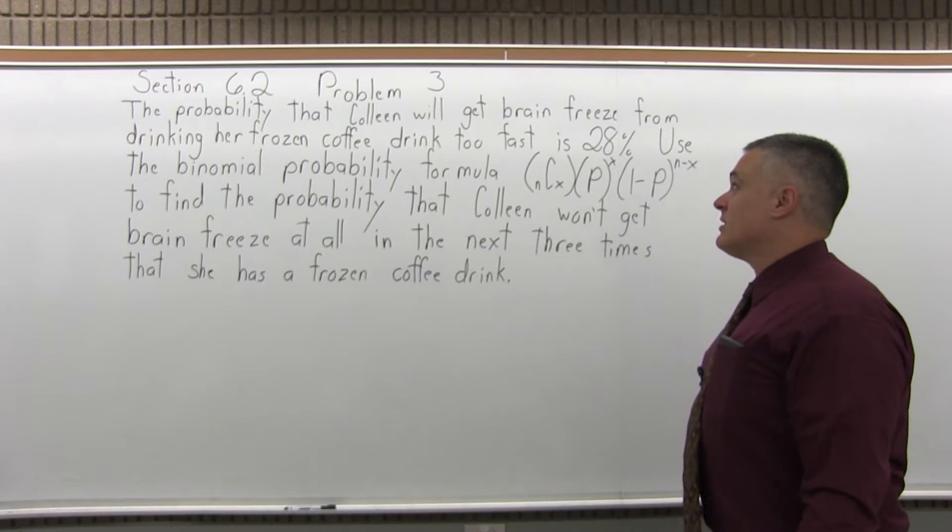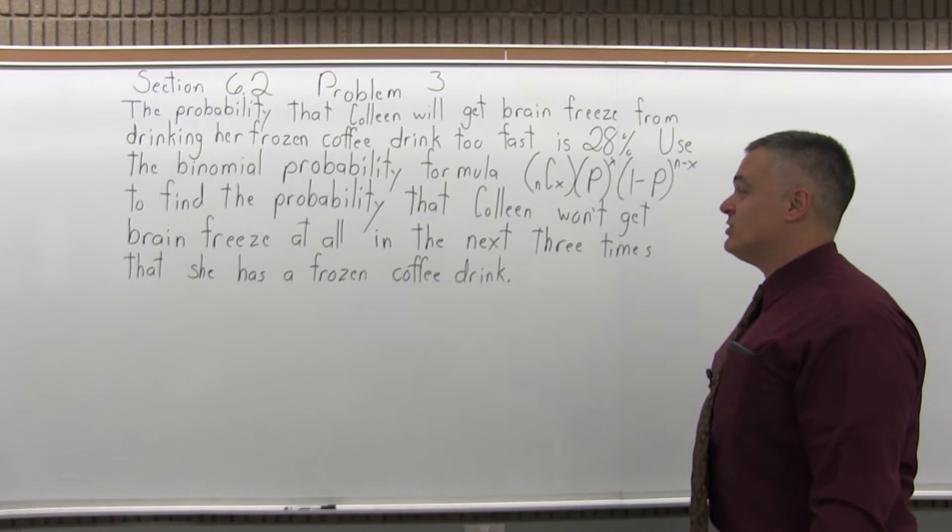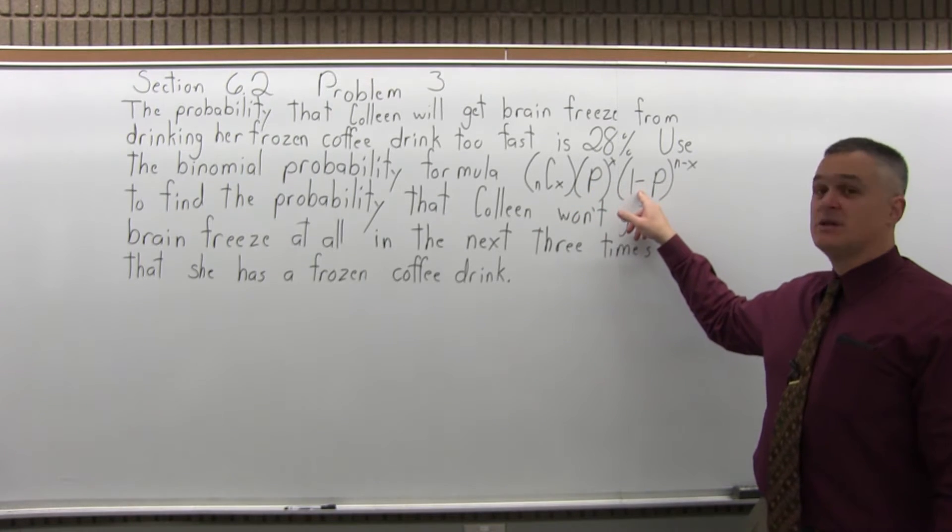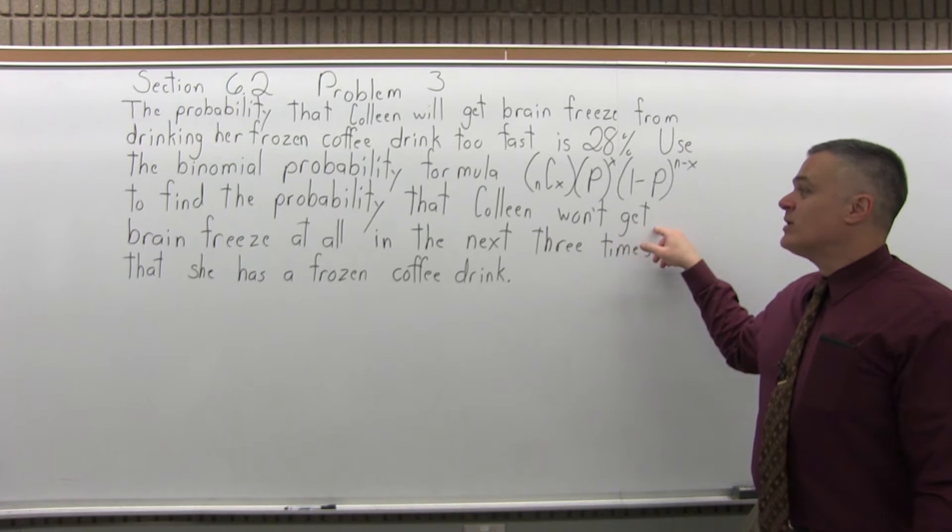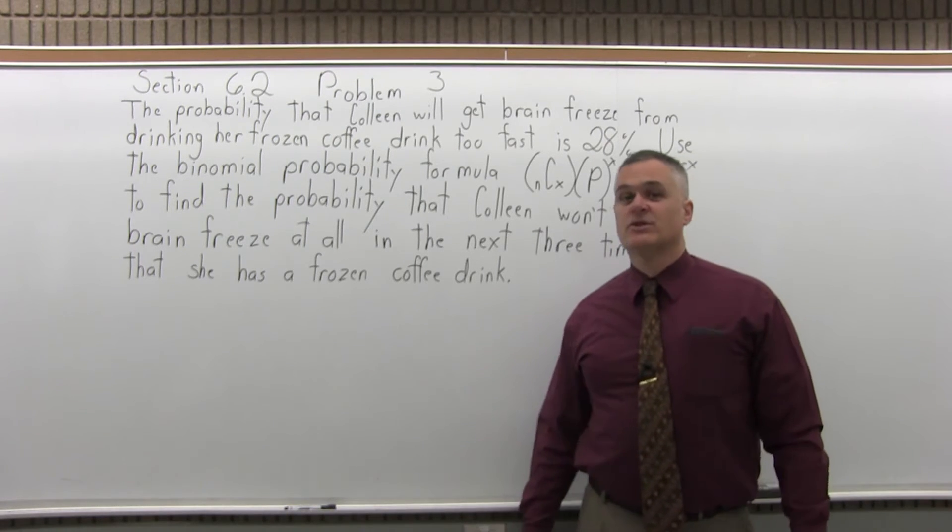It says the probability that Colleen will get brain freeze from drinking her frozen coffee drink too fast is 28%. Use the binomial probability formula, n combination x times p to the x times 1 minus p to the n minus x, to find the probability that Colleen won't get brain freeze at all in the next three times that she has a frozen coffee drink.